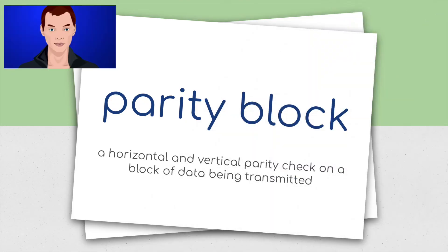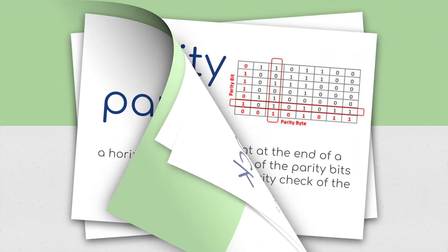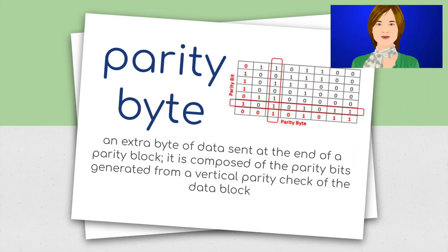Parity block: a horizontal and vertical parity check on a block of data being transmitted. Parity byte: an extra byte of data sent at the end of a parity block. It is composed of the parity bits generated from a vertical parity check of the data block.